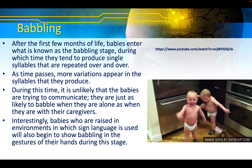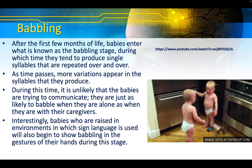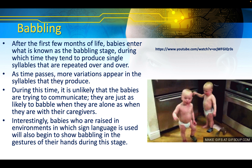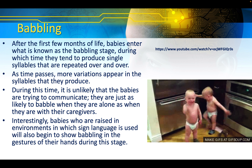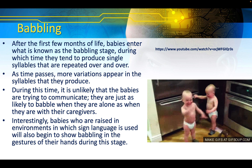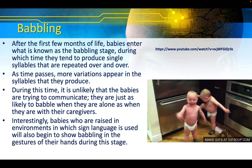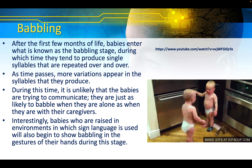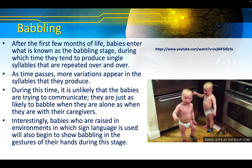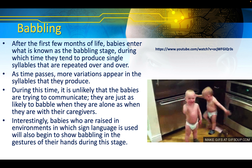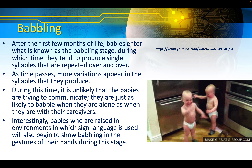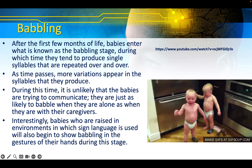After the first few months of life, babies enter what is known as the babbling stage, during which time they tend to produce single syllables that are repeated over and over. As time passes, more variations appear in the syllables they produce. During this time it is unlikely that babies are trying to communicate. Interestingly, babies who are raised in environments where sign language is used will also begin to show babbling in the gestures of their hands during this stage.